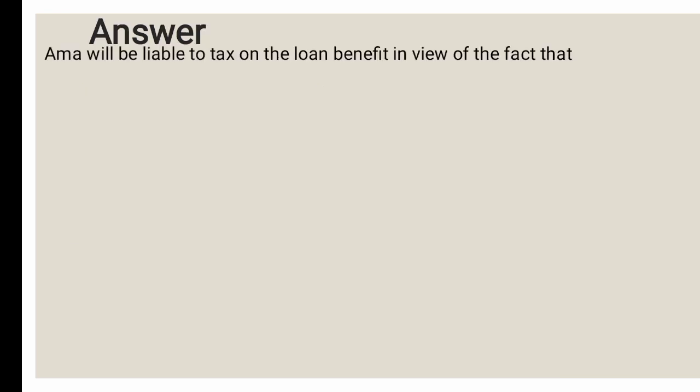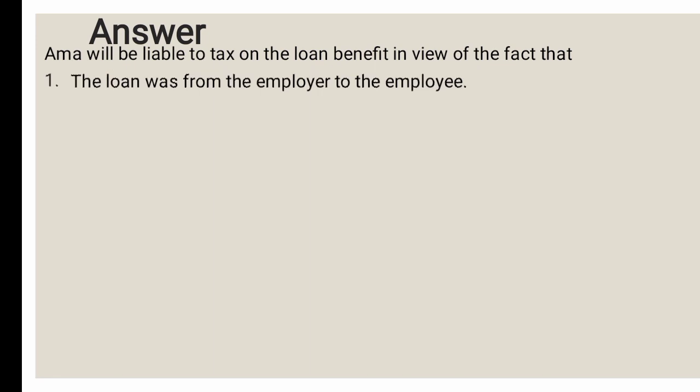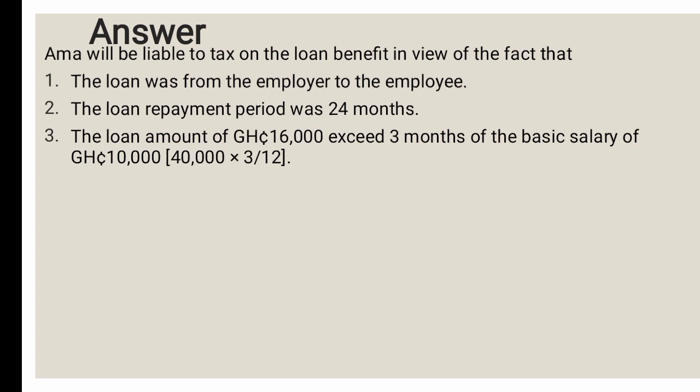Amma will be liable to tax on the loan benefit. The loan is from employer to employee. The repayment period is 24 months, exceeding 12 months. The loan of GHS 16,000 exceeds three months of basic salary: GHS 40,000 × 3/12 = GHS 10,000. Since GHS 16,000 exceeds GHS 10,000, all three conditions are met and we will quantify the loan benefit.